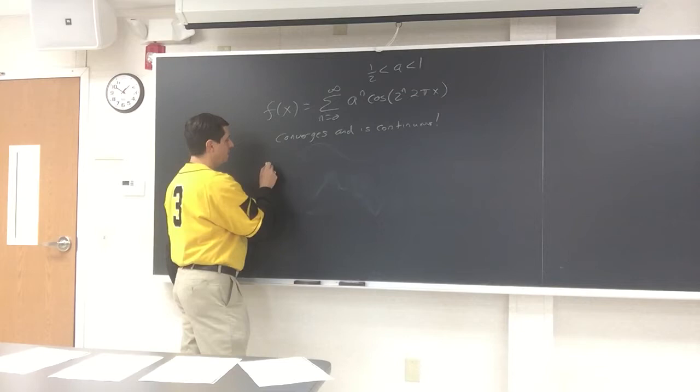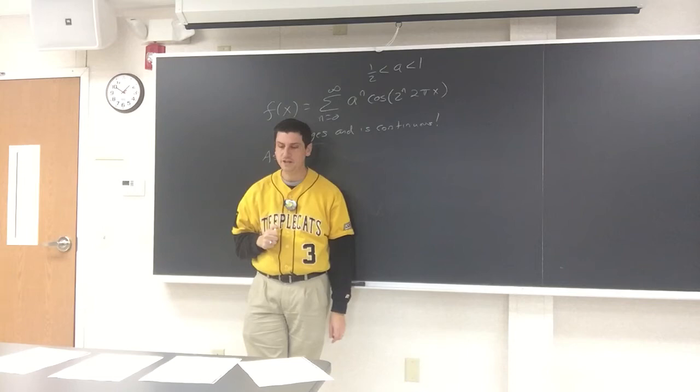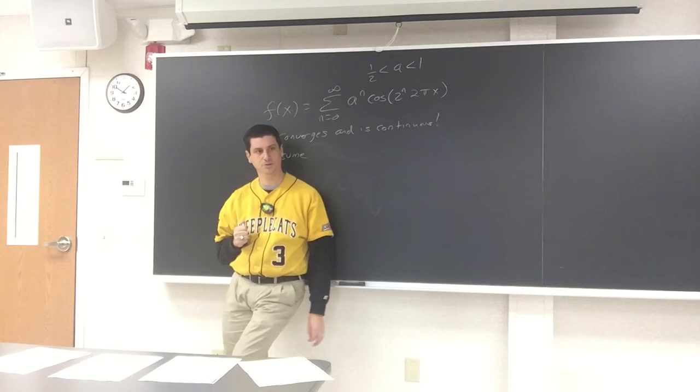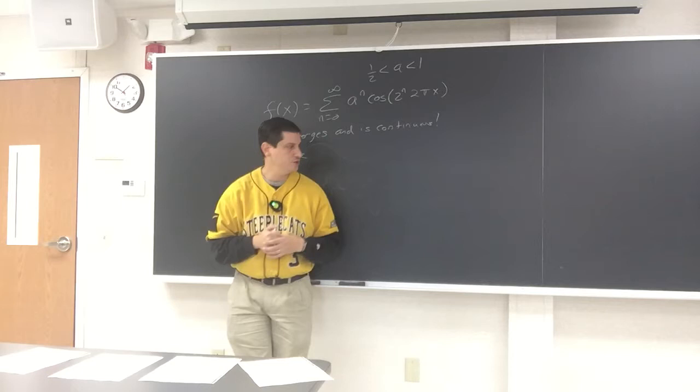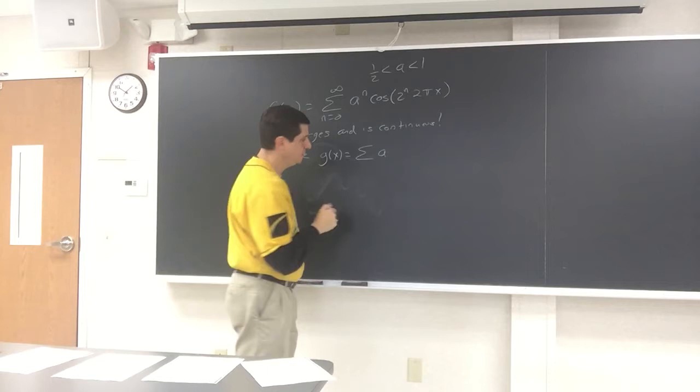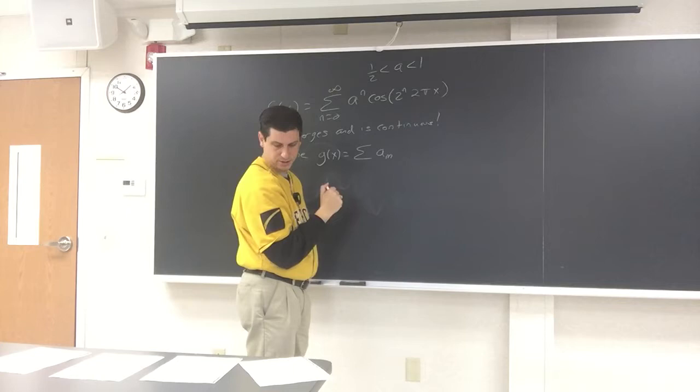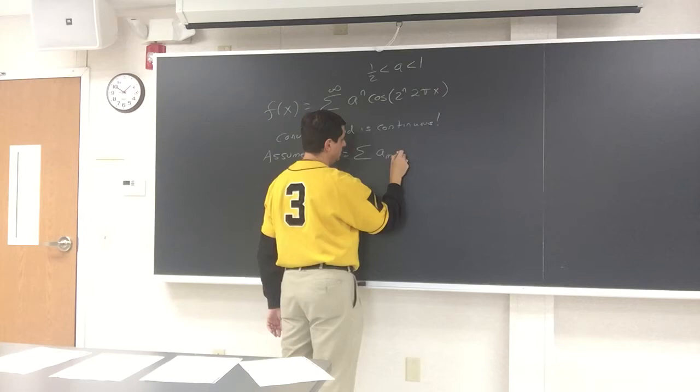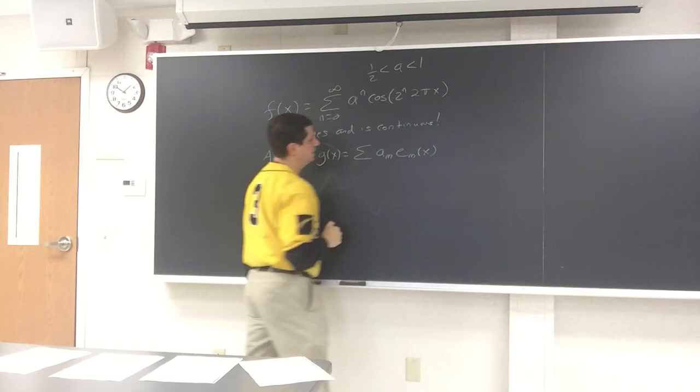Here is a nice fact. What we're going to do is assume we have a very interesting function g where most of the Fourier coefficients are 0, and then only every now and then do we get a non-zero coefficient. So let's say g(x) is the sum of a_m · e_m(x) — something like that, using the same notation.